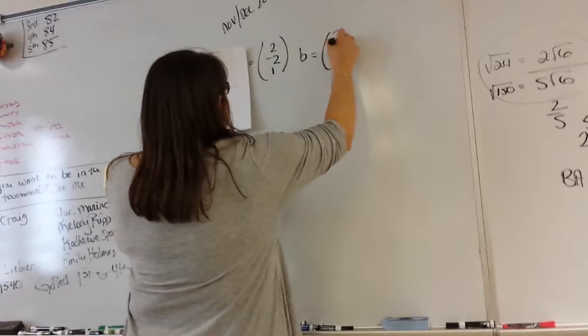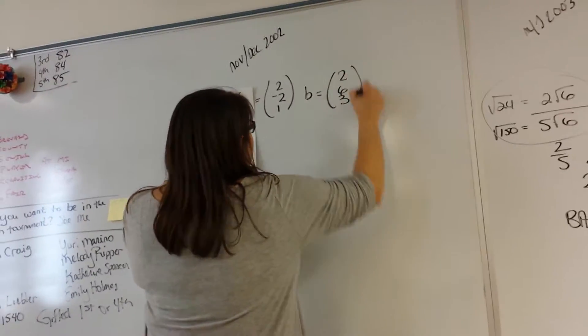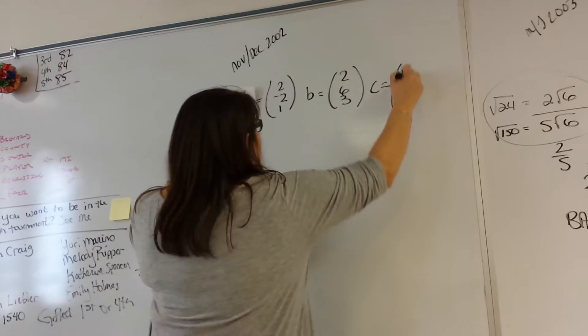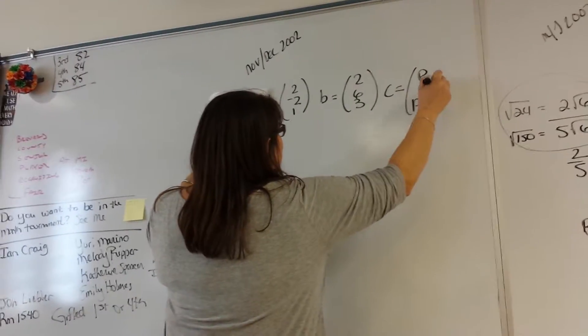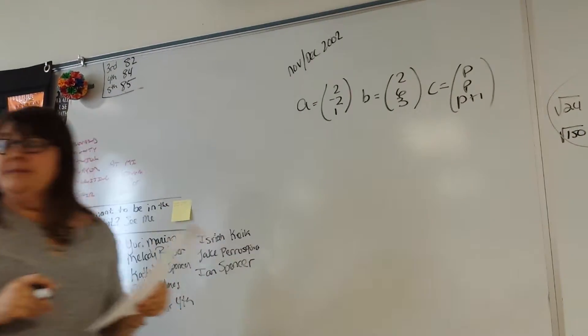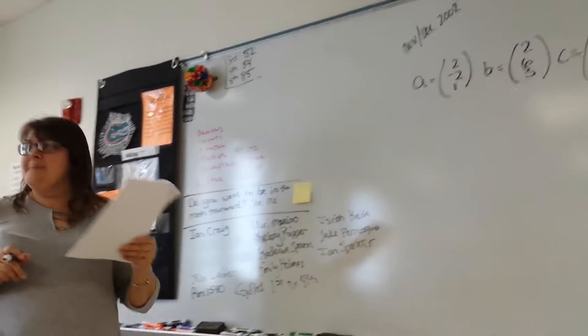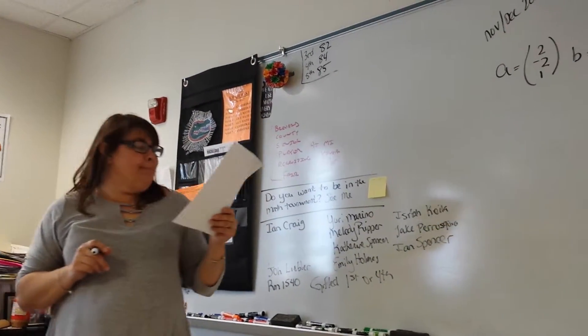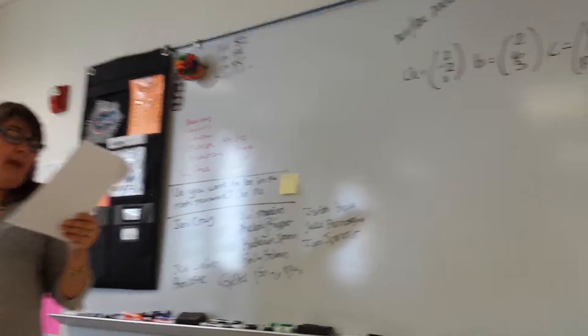B is 2, 6, 3. And C is P, P, P plus 1. Are we okay so far?